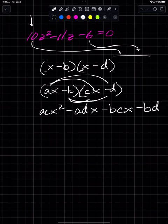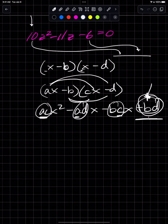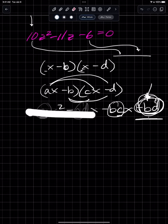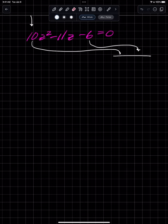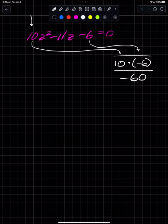When I distribute this I get a times c x squared minus a times dx minus b times cx plus b times d. The problem is if I just find the factored pairs of b and d, I will never get these a and c values into it. That's why the method for factoring by grouping starts with taking the lead coefficient, in this case 10, and multiplying it times the constant negative 6, and so I get negative 60.